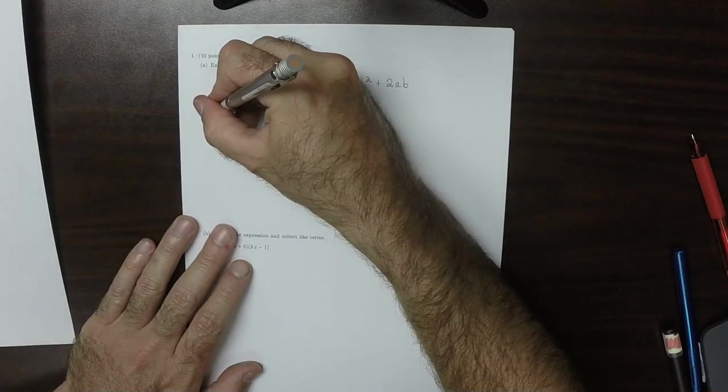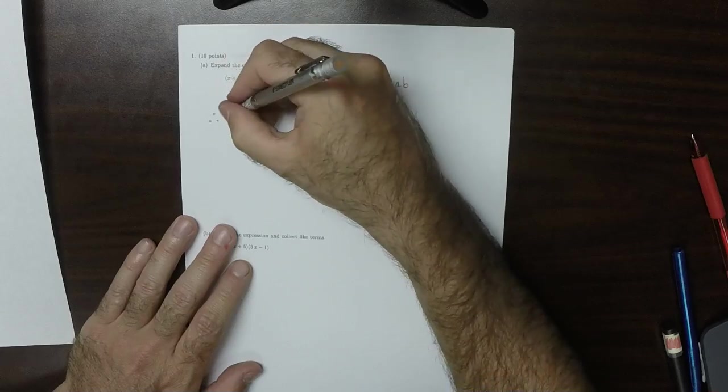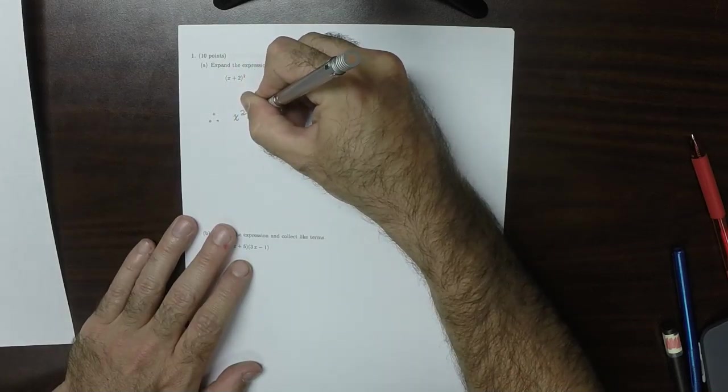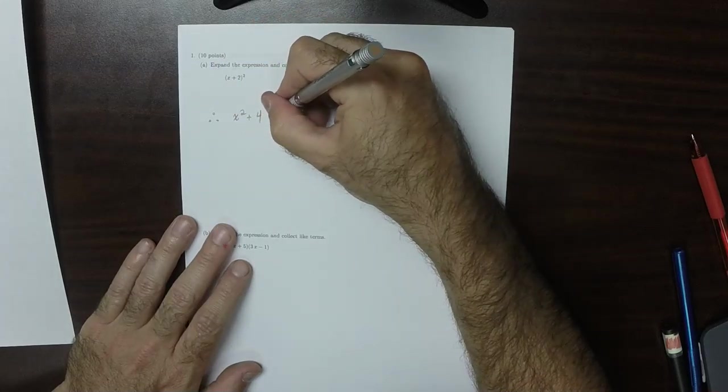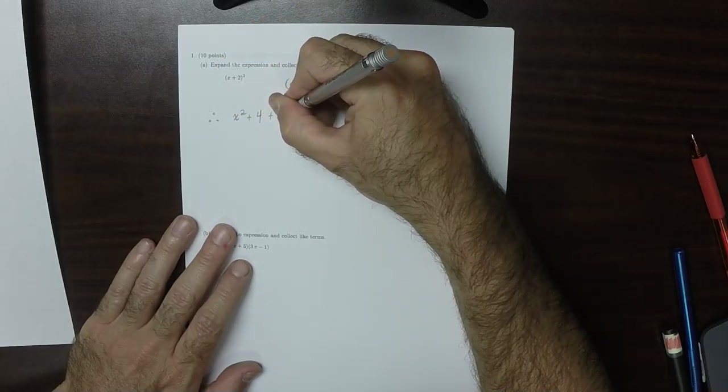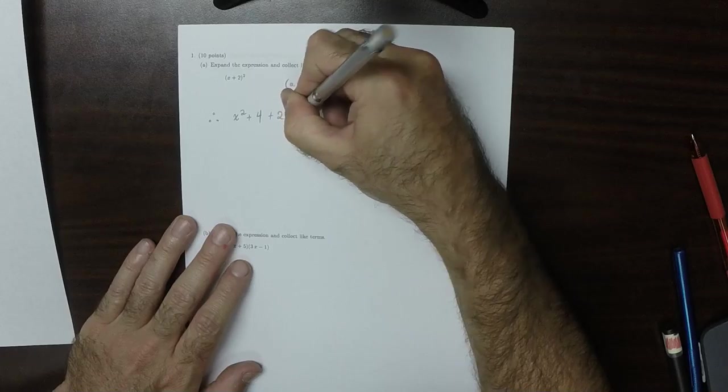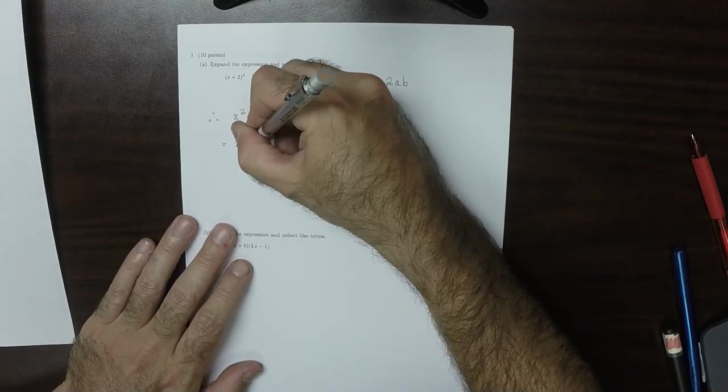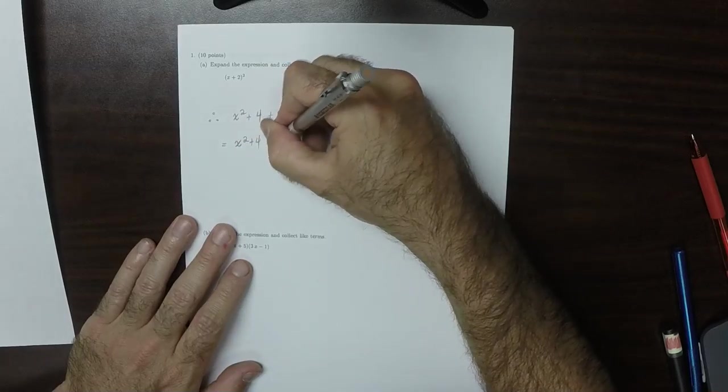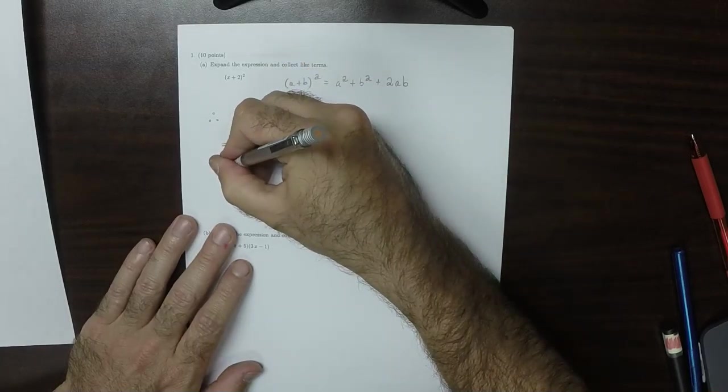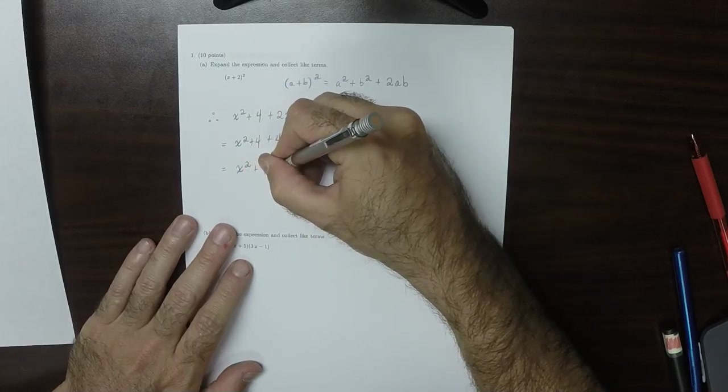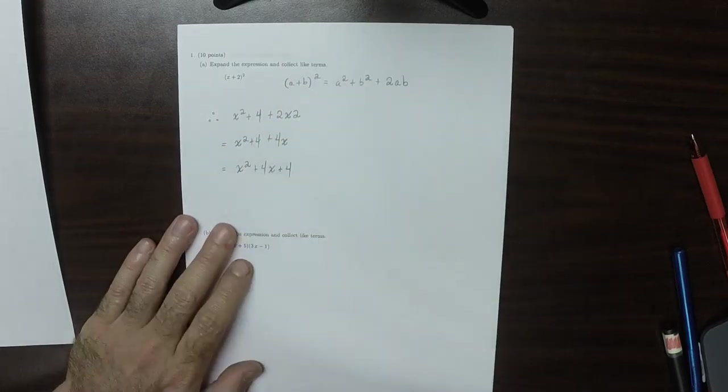So in this case, that means that the answer will be x squared plus 4, so the sum of those squares, and then plus 2 times x times 2. So that would be x squared plus 4 plus 4x. And then writing this in descending order of degree, x squared plus 4x plus 4.